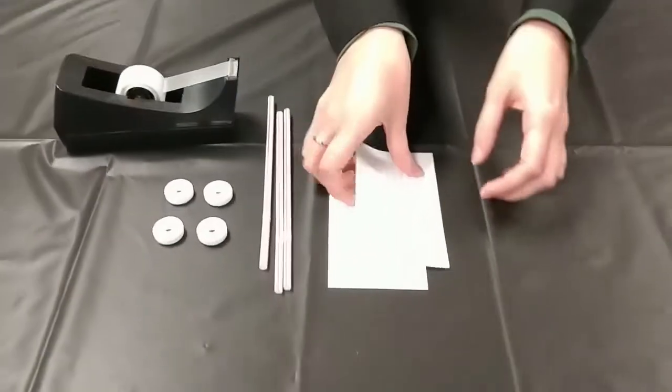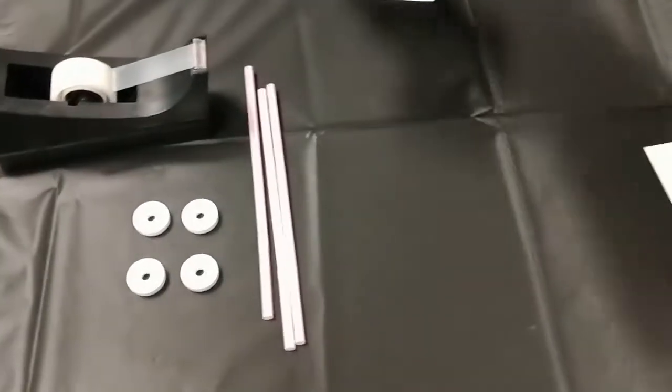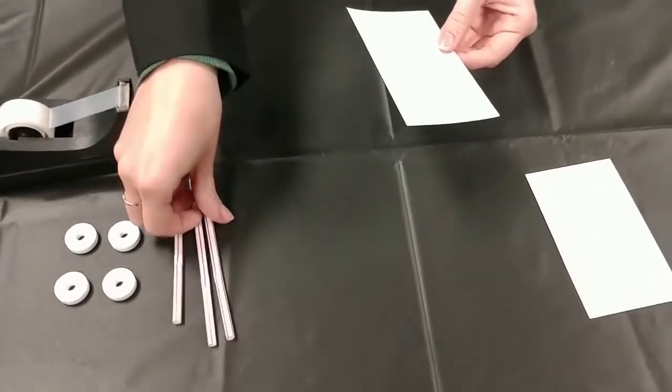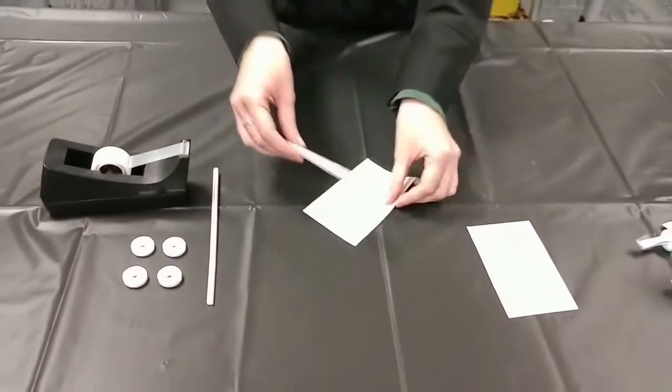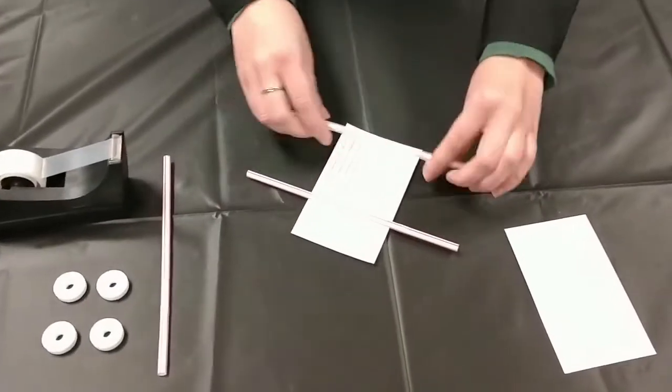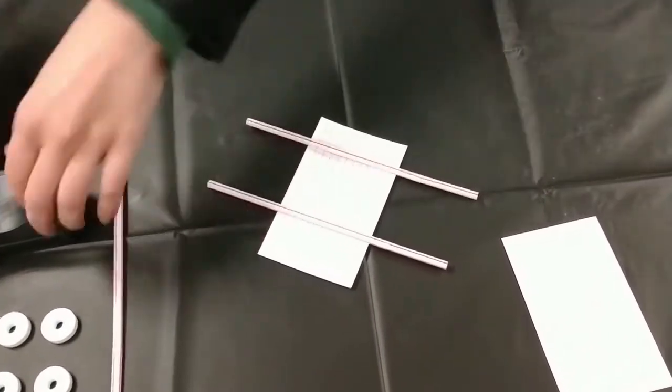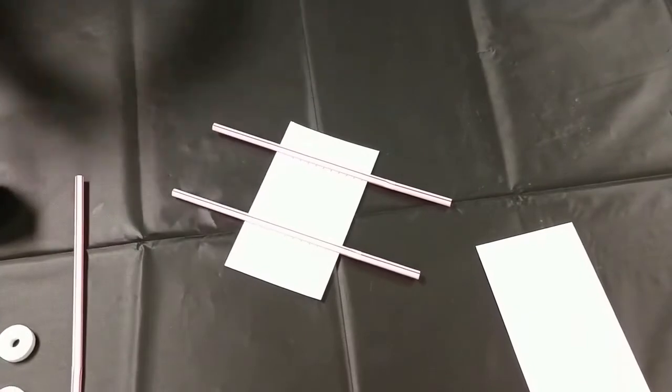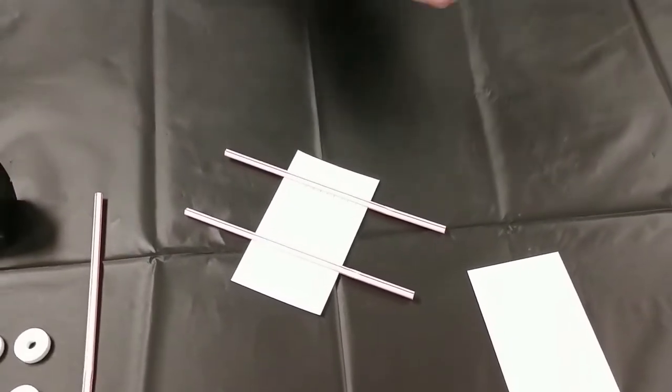So we're going to go ahead and get started. You're going to take one of your index cards and you're going to take two of your straws and line them up on your index card. And then you're going to tape them down. These are going to be your axles, which will hold your lifesavers, which will be the wheels.